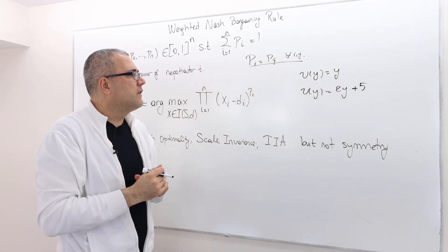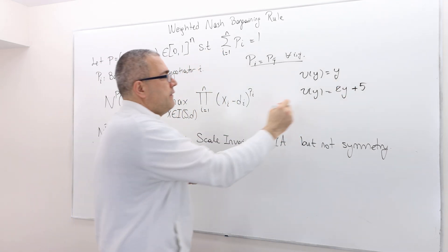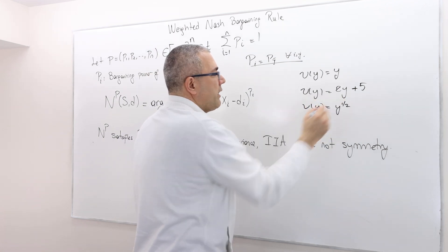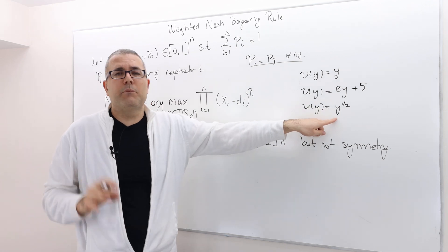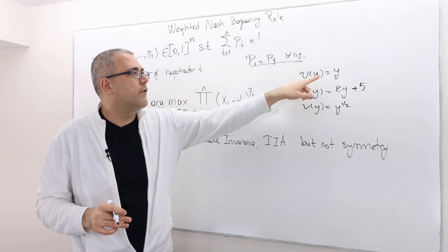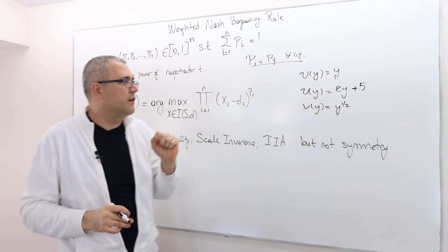That doesn't matter. So, but obviously, if U of Y is equal to Y to the power 1 half, that is going to make a huge difference. Because this is not a positive affine transformation of this utility function. Okay.